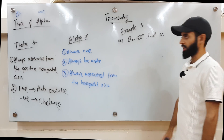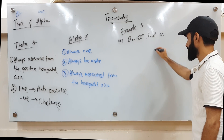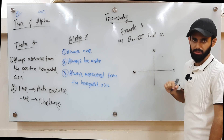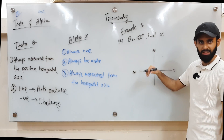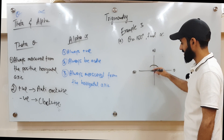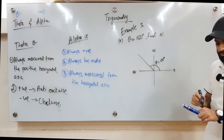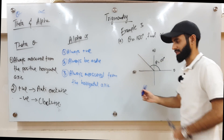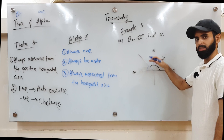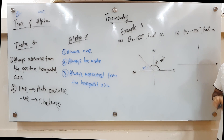Example 3a: Given theta = 150°, find alpha. Since theta is positive, start from the positive horizontal axis and move anti-clockwise. 150° lands in the second quadrant. Alpha is the angle from the horizontal axis to that line — and since angles on a straight line sum to 180°, alpha = 180° − 150° = 30°.